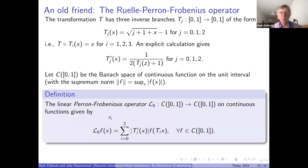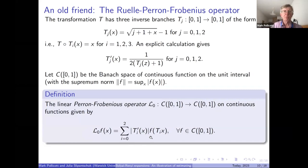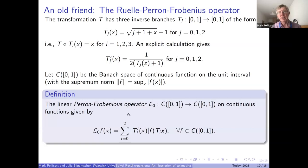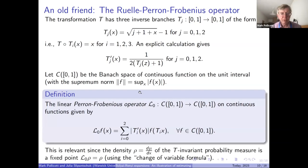The usual Perron-Frobenius operator takes a continuous function and associates another continuous function: it takes your function, composes it with each of the three contractions, averages the values multiplied by the derivative of the contraction. That's the definition of this operator. I have three contractions coming from my original expanding map, and I've associated to them an operator from continuous functions to continuous functions. The density of the invariant measure is actually a fixed point for this operator.